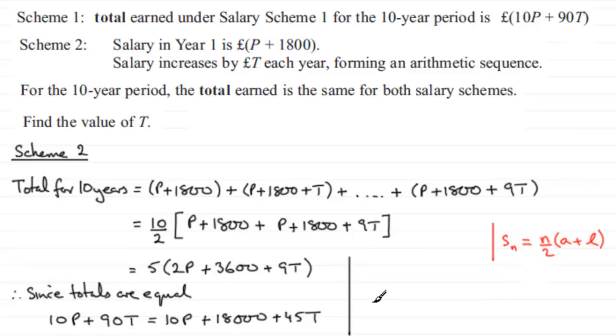Now it's just a question of rearranging to work out T. We're lucky here because if we take 10P from both sides, they cancel out. If we take 45T from both sides, we've got 90T minus 45T, which gives us 45T equals 18,000.